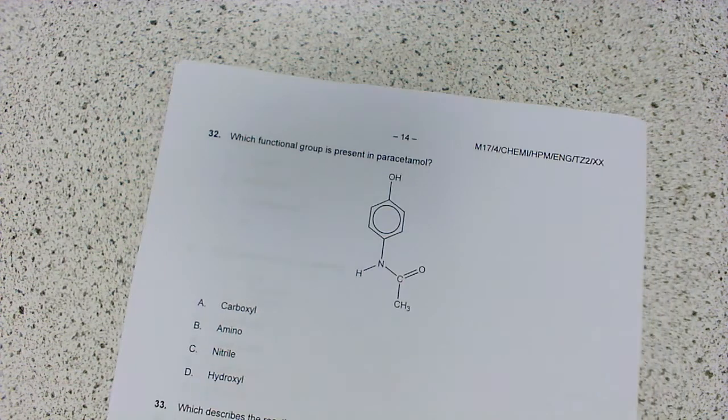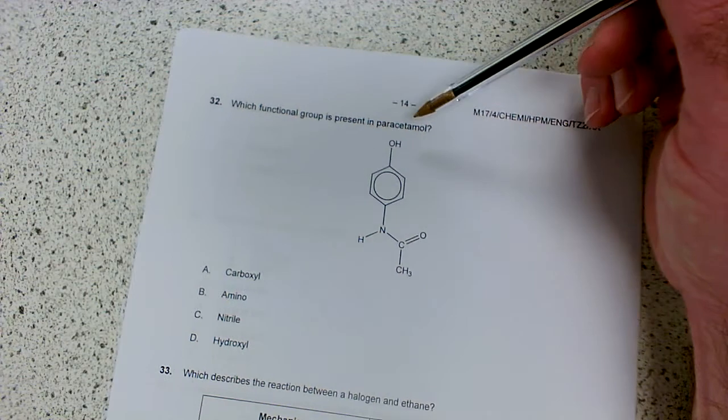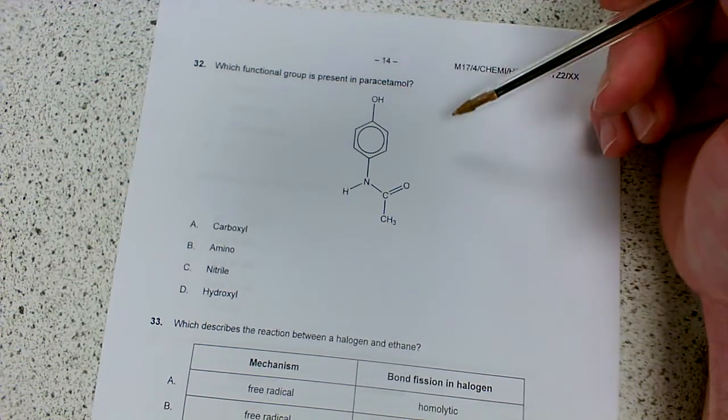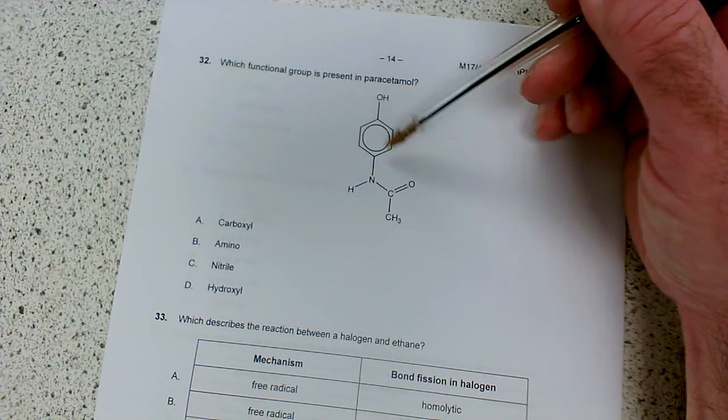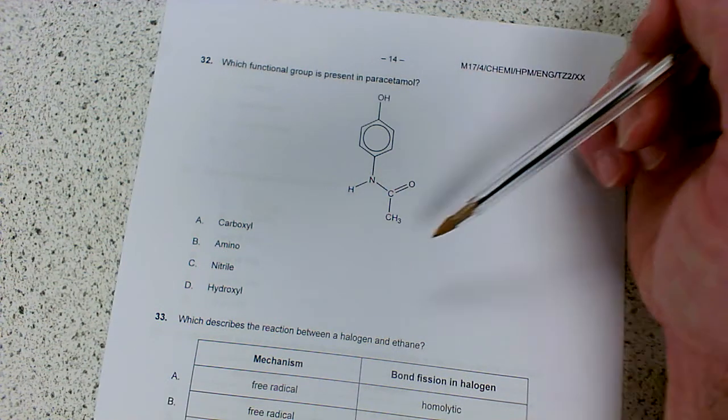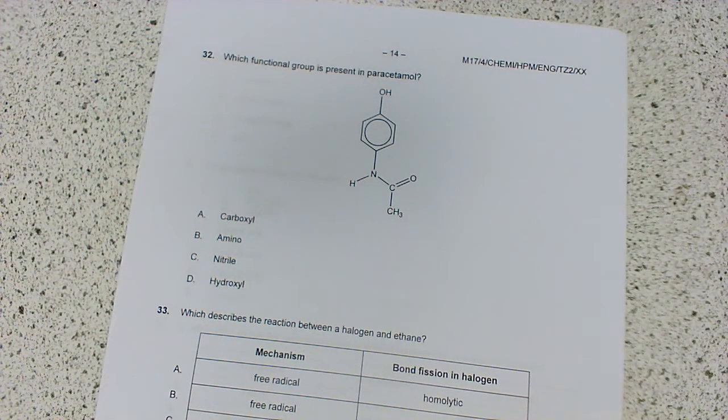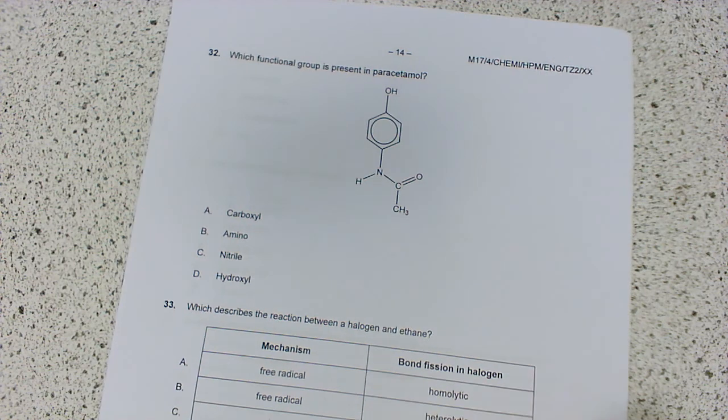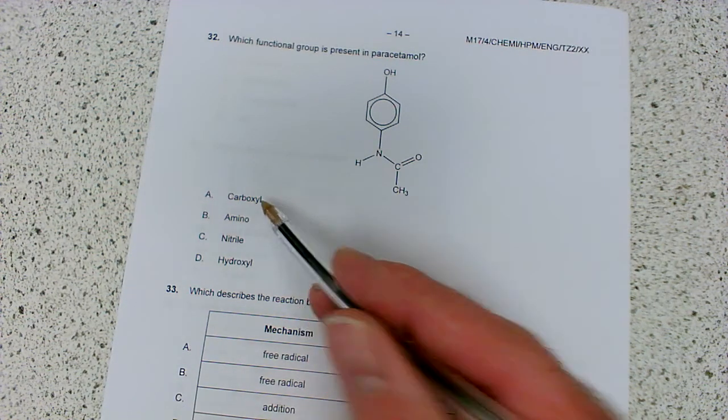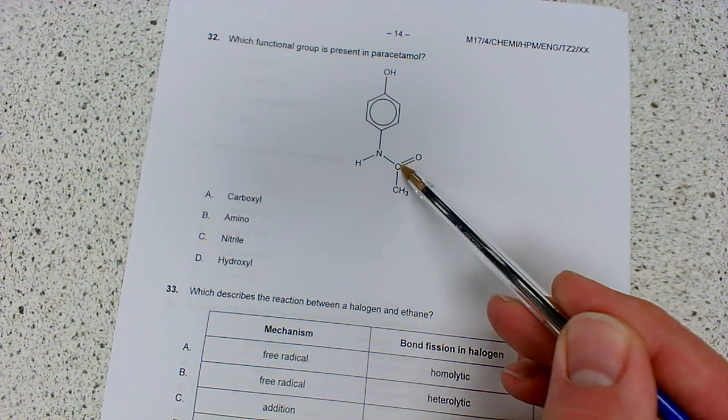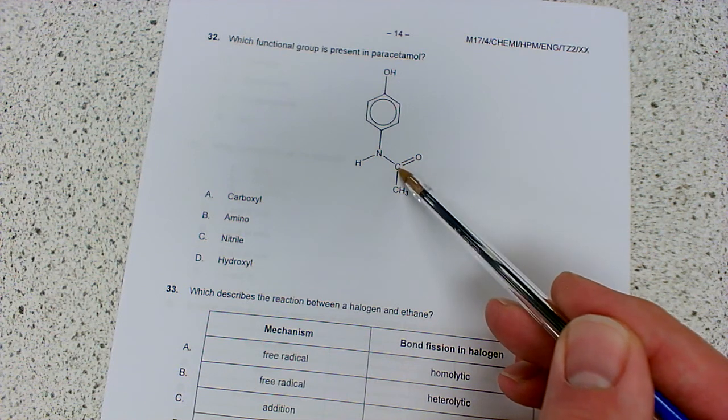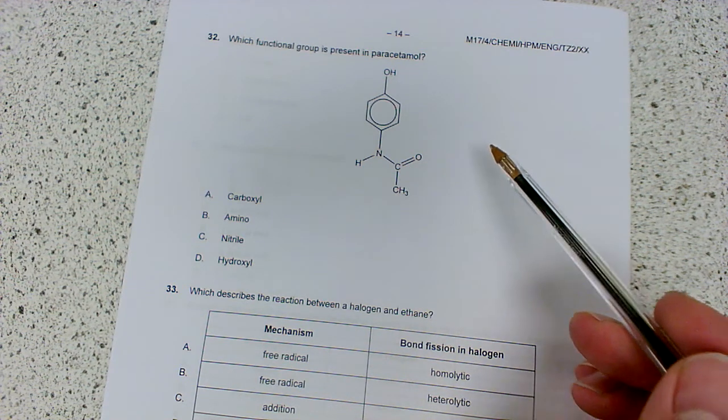Now onto the organic section. Which functional group is present in paracetamol? We can see it's a phenol with an OH group on a benzene ring, and an amide here. Let's check the options - carboxyl, not quite right for this structure.